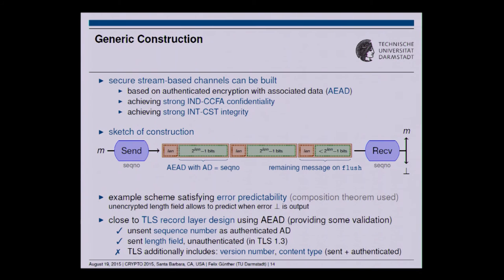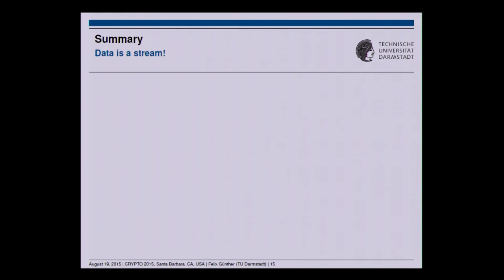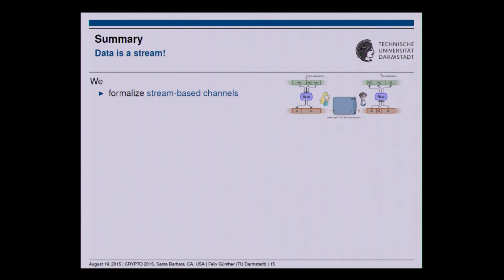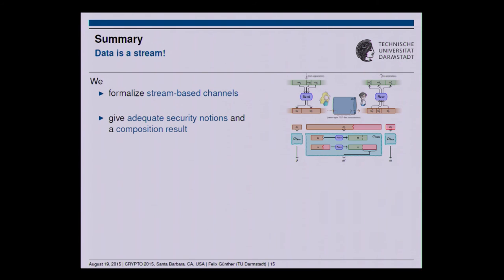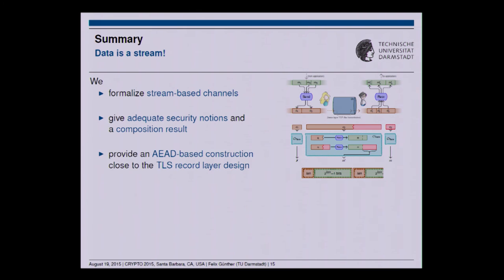However, we are not claiming this is TLS — there are definitely differences. Most importantly, TLS has more fields, such as a version number and content type field which allow multiplexing of data, and both of these are sent and authenticated. To conclude: data is a stream and we believe we should treat it as such. Our work formalizes the notion of stream-based channels and provides adequate security notions for this setting. We are also able to reconstruct the composition theorem in this setting, and we sketch the AEAD-based construction, which is relatively close to the TLS record layer design — providing a kind of validation for the stream-based setting.